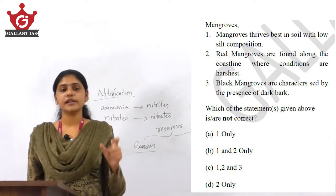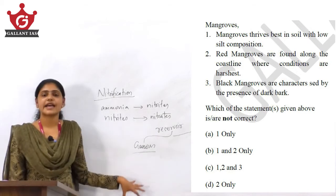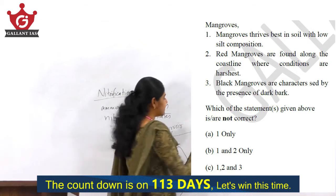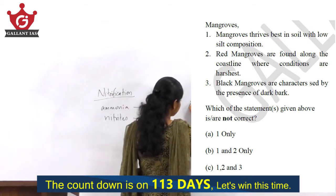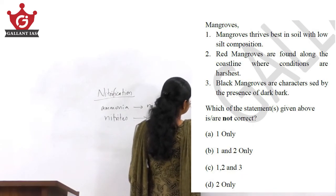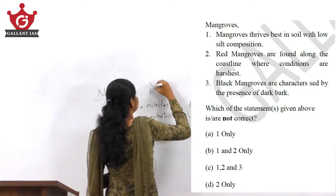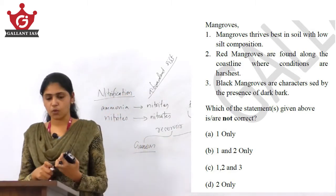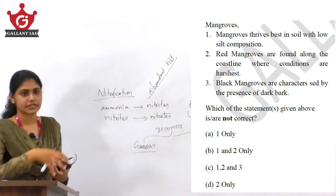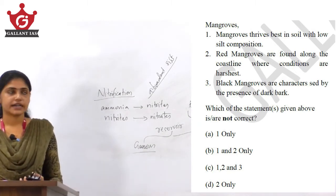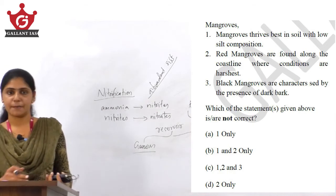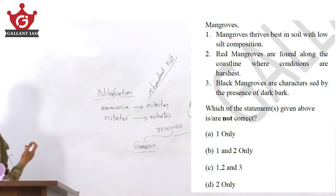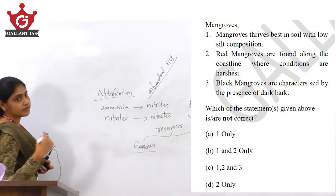Mangroves thrive well in locations which are very abundant in silt. The areas where mangroves inhabit will have abundant silt brought by rivers. So it is not low silt — it is abundant silt. That is why the first statement is wrong.